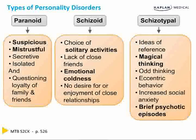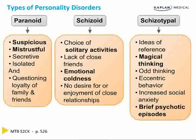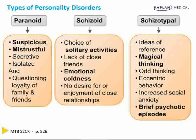Schizotypal is a fun one — they have ideas of reference, magical thinking is a really big one, odd thinking, eccentric behavior, and increased social anxiety. Brief psychotic episodes are possible. These are people with rooms full of blacklight posters, dragon statues, who love the magic eight ball, play Ouija boards, and believe dolls can talk or come alive. Delusional disorder has one specific thing they're suspicious of, whereas paranoid personality disorder involves suspicion of many things — and that helps differentiate these from mood and psychotic disorders.